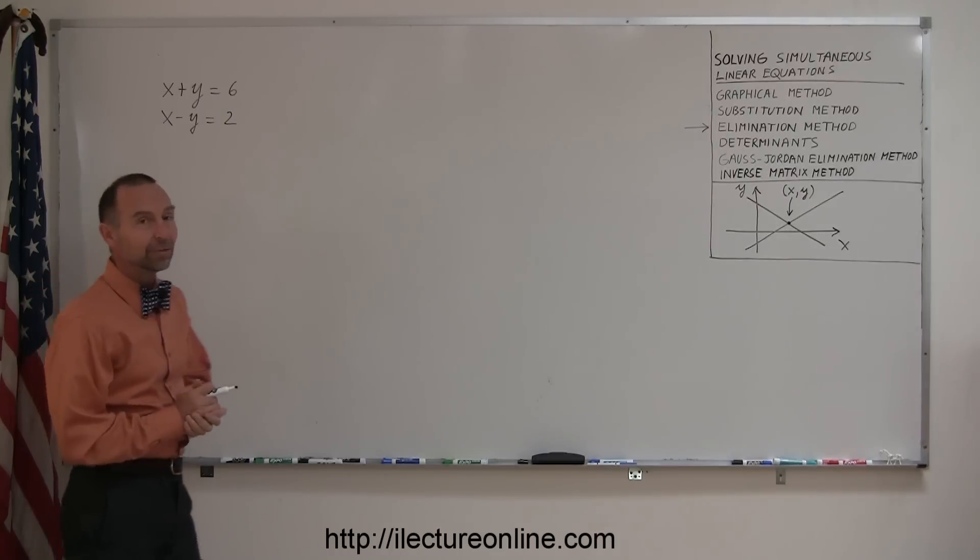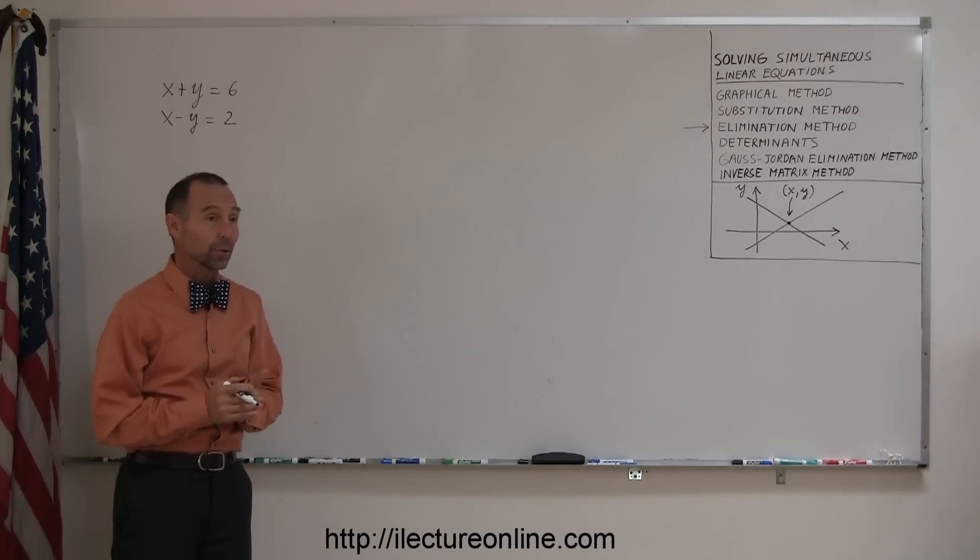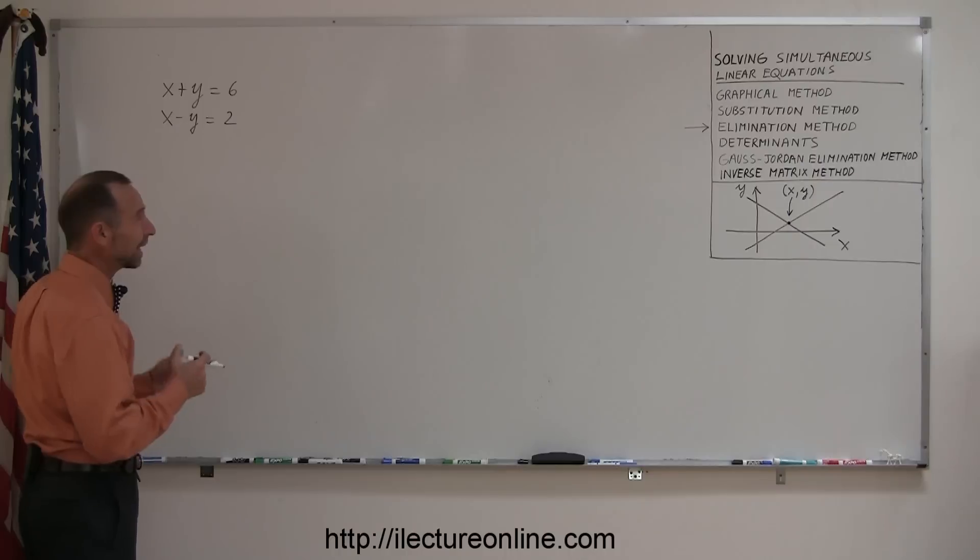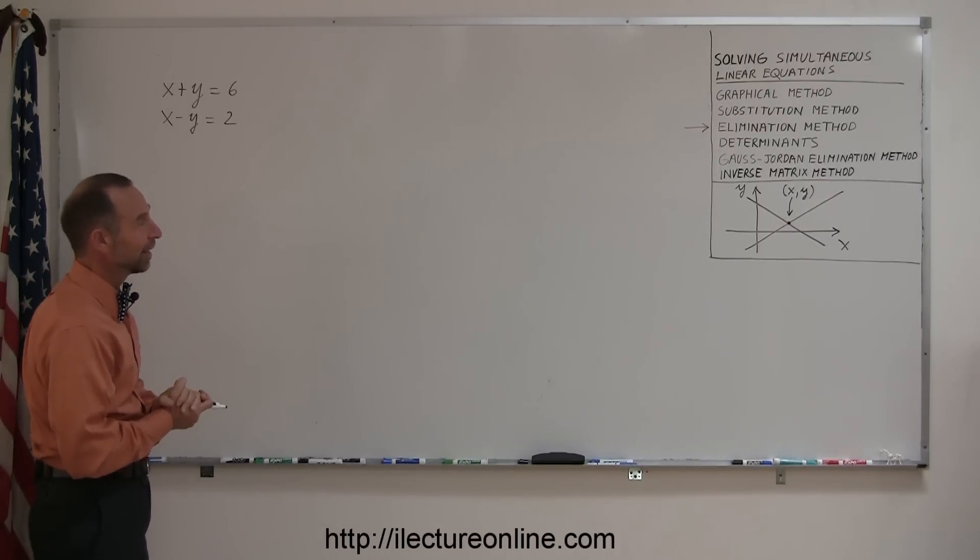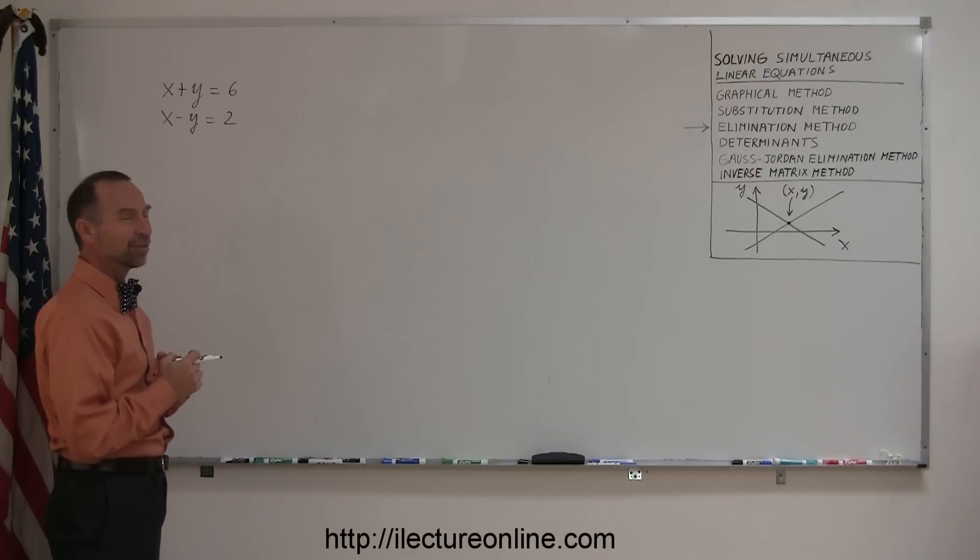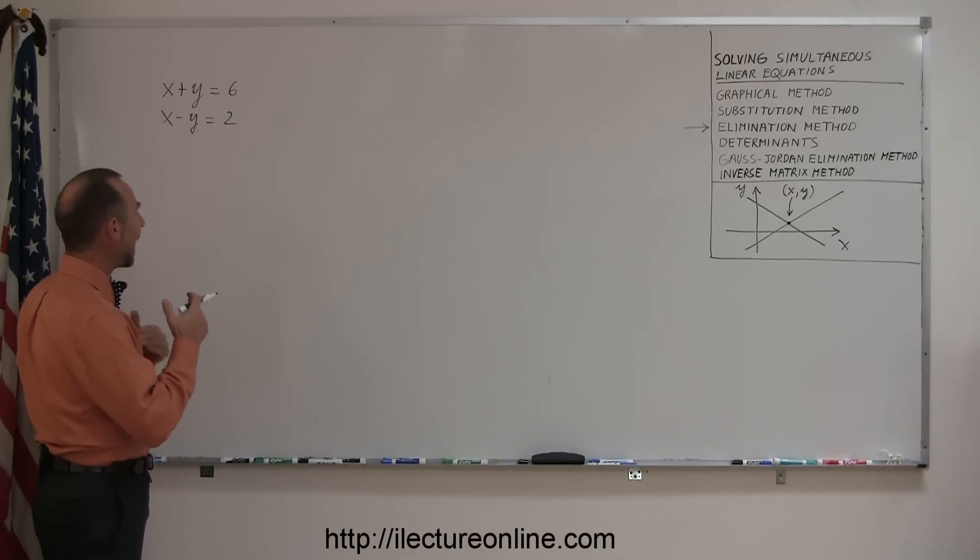Usually the way you do that is by either adding or subtracting the two equations. The way I like to use the elimination method best is by adding the two equations in such a way that one of the variables drops out.